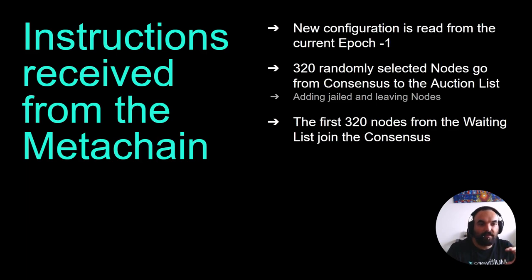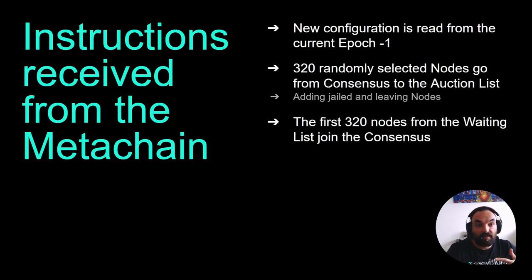Everything is connected. This also adds jailed and leaving nodes. For example, if we have three jailed nodes and three leaving nodes, when the selection has happened, the total of the auction list will be 326 instead of 320 — because we have to compensate for the nodes that are leaving or jailed, so we have to add more. Nodes that are not qualified will be left out of the consensus.